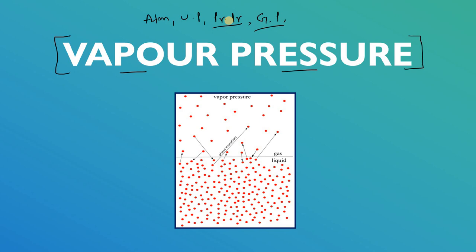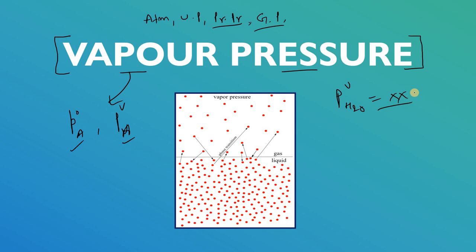In this video we will discuss and understand the concept of vapor pressure. In your textbook there may be different notations for vapor pressure depending on the author. For example, if someone says the vapor pressure of water is a certain value in mmHg or in Pascal, you must know what that means — and that's why we will discuss this term.